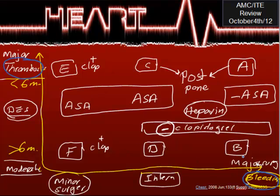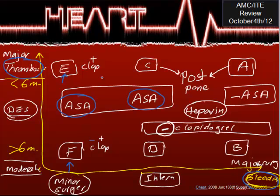For minor surgery — whether the patient is at point F or E on the curve — continue aspirin regardless of thrombosis risk level. Plavix can be continued or stopped: after six months you may not need Plavix. So for minor surgery: aspirin is continued, and Plavix is either continued or discontinued depending on the time since stenting.